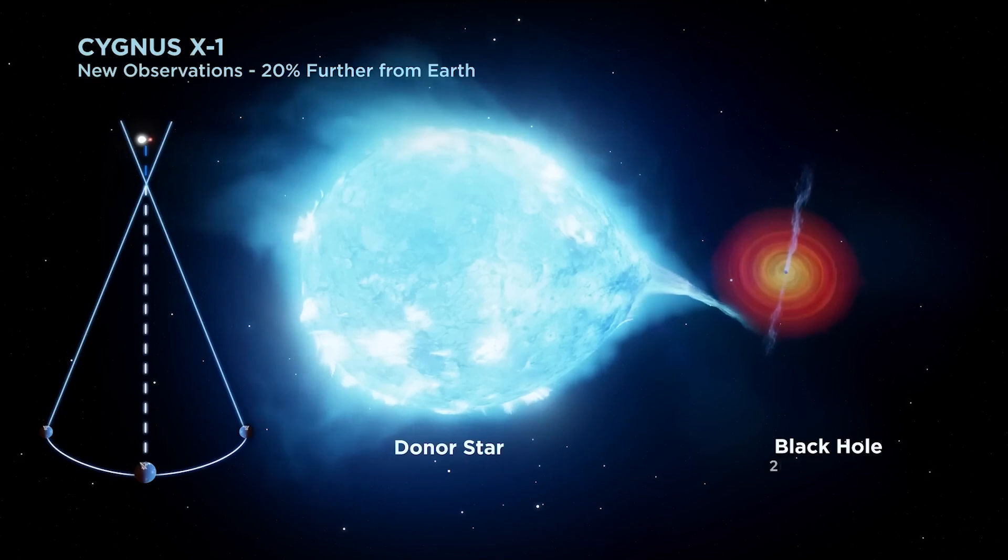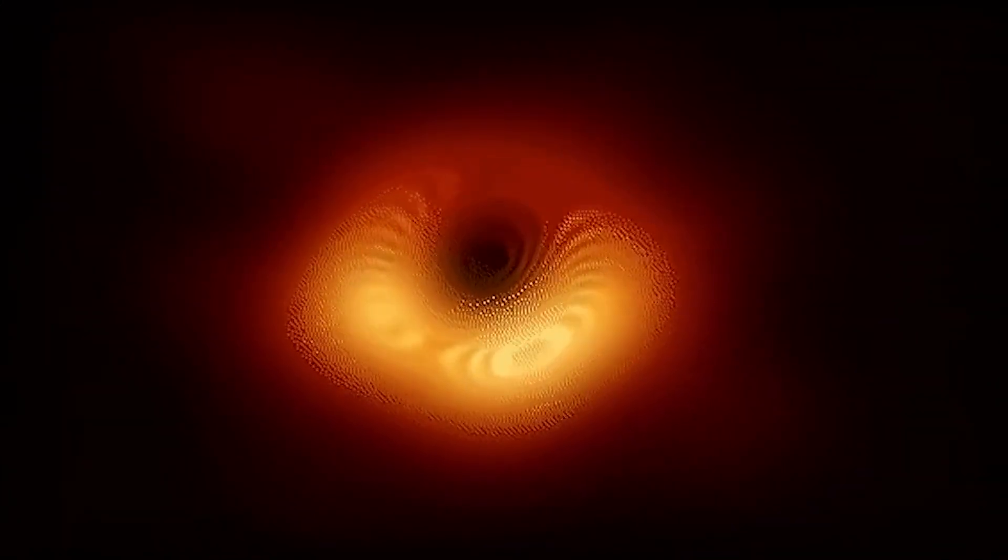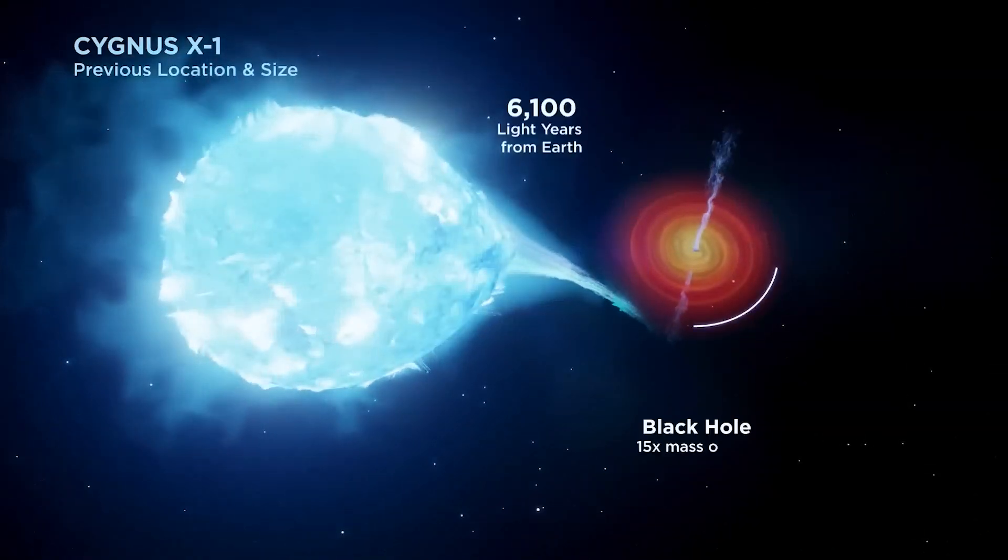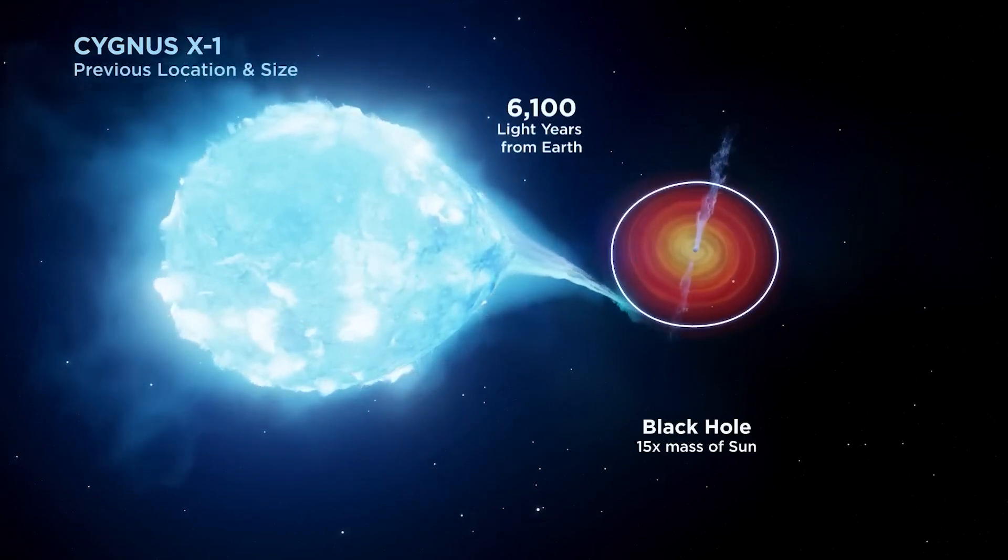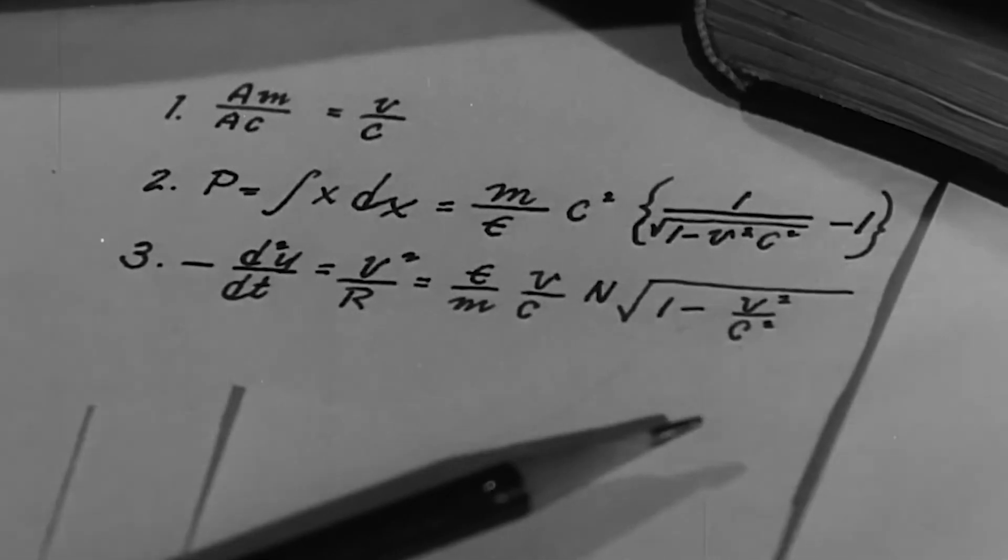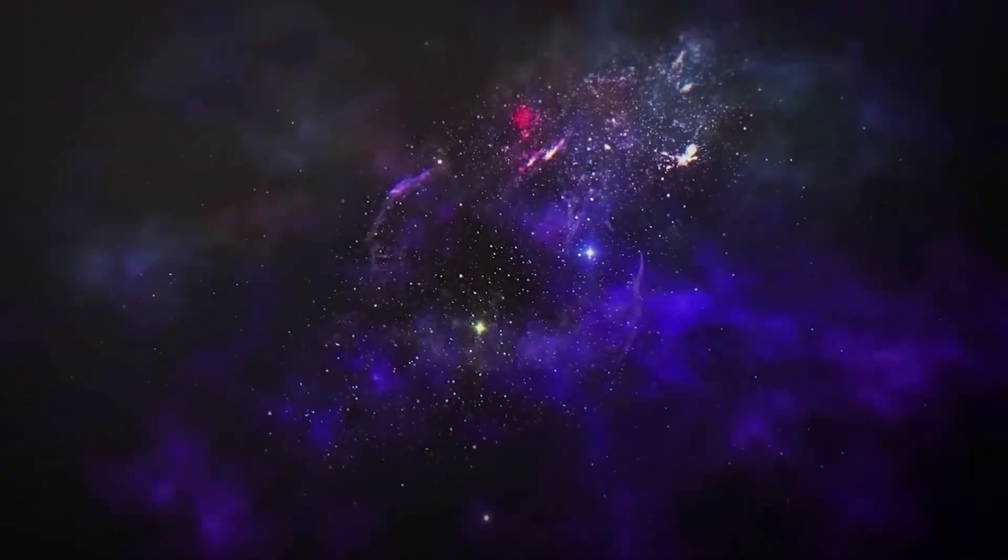However, through careful analysis of the orbit of the blue star, they were able to deduce the presence of a massive invisible object that could only be a black hole. The discovery of Cygnus X-1 turned out to be a groundbreaking moment in the quest to uncover the secrets of black holes. It provided concrete evidence of their existence, validated Einstein's theory of relativity, and opened up a whole new avenue of research in modern astronomy.